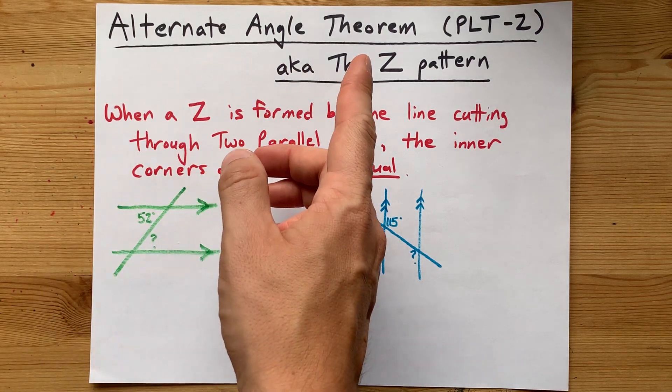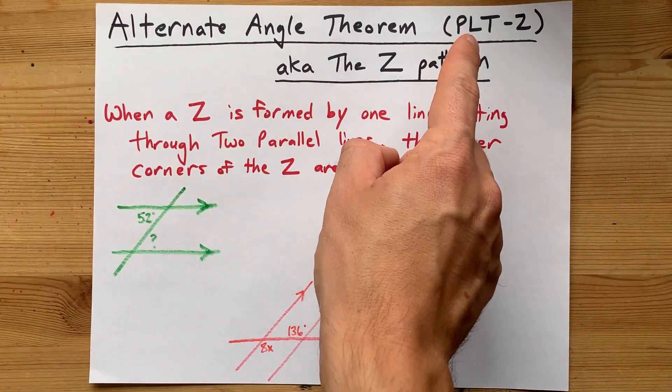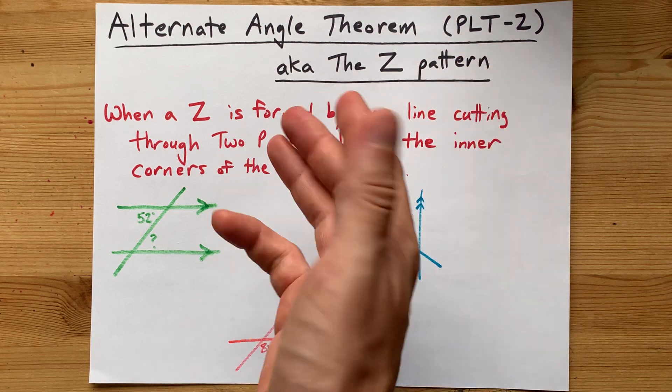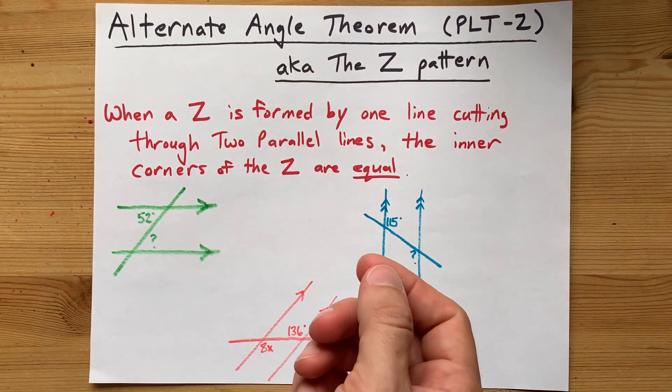The Alternate Angle Theorem, which some people call PLT-Z for Parallel Line Theorem Z, also known as the Z pattern